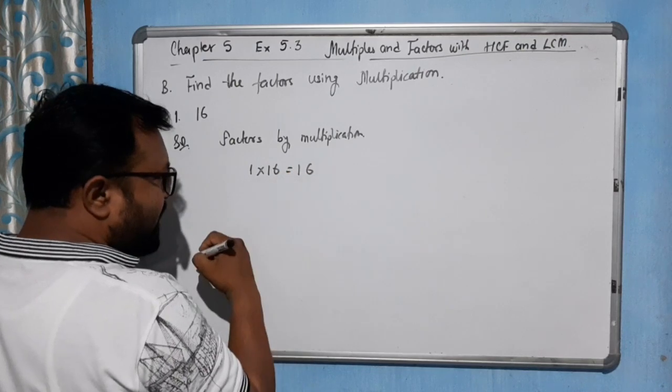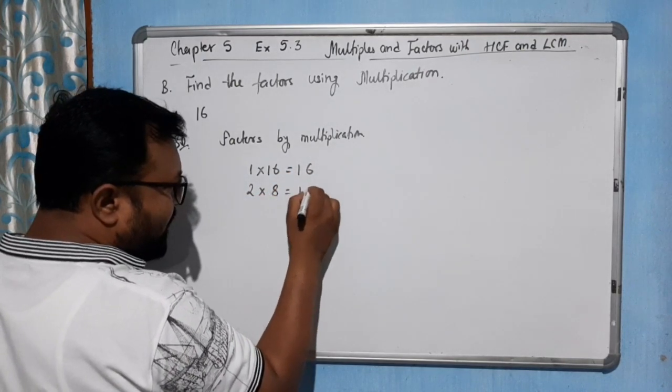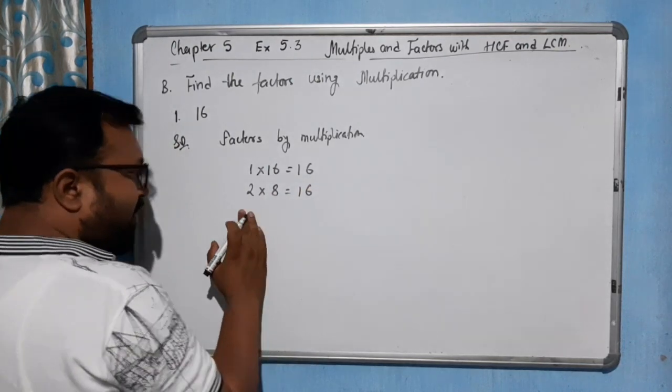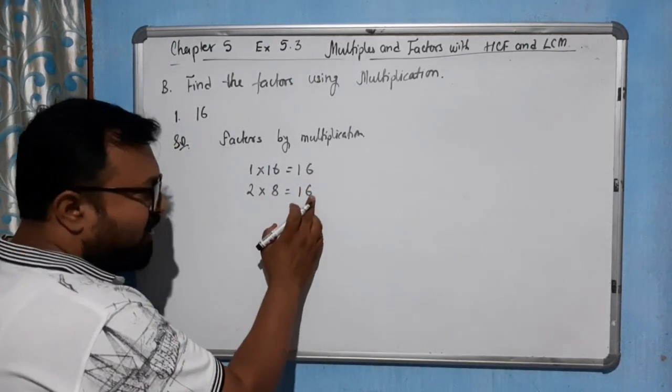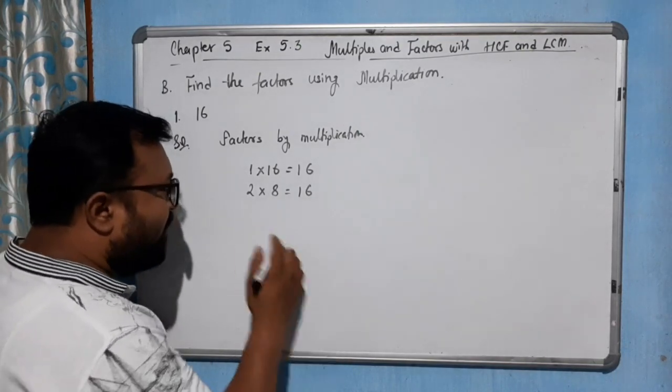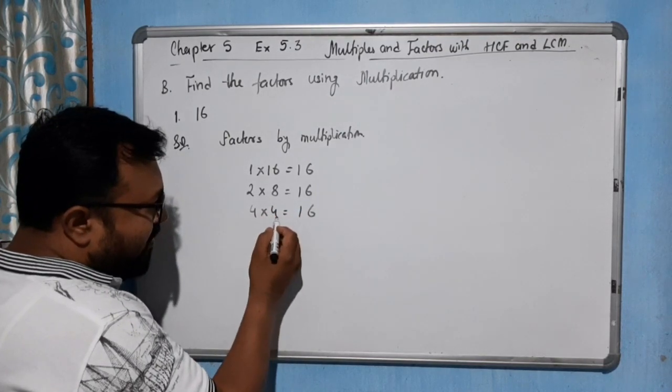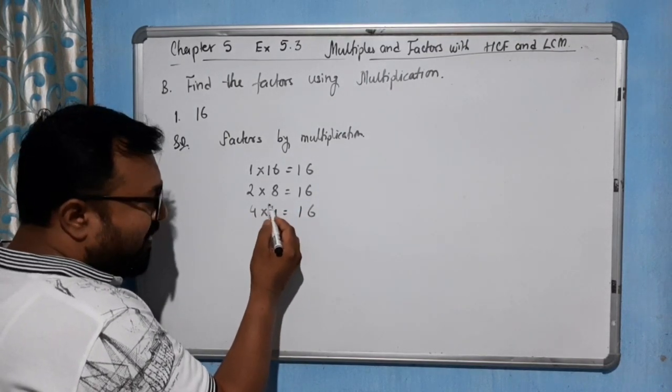Now 2: 2 into 8 gives you 16. Then 3: with 3 we are unable to find 16 because 6 plus 1 is 7, so 7 is not a multiple of 3, not possible. Then 4: 4 into 4 gives you 16.